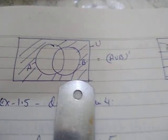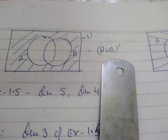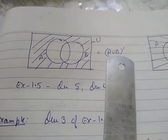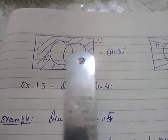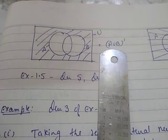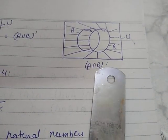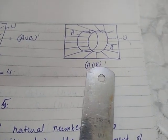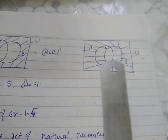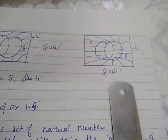By Venn diagram: A union B complement means U minus A union B — the A union B part is unshaded, showing the region neither in A nor in B. For A intersection B complement, only the intersection part is removed — the remaining region outside A intersection B is your A intersection B complement.